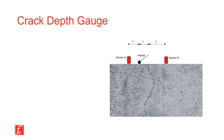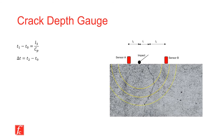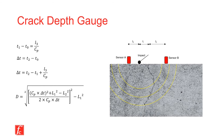The ImpactEcho method can also be used to evaluate the crack depth in concrete components. First, two motion transducers are placed on either side of the crack. A steel impactor is then used to strike the concrete surface. The arrival time of the P wave at the transducers is then used to calculate the depth of the concrete crack.